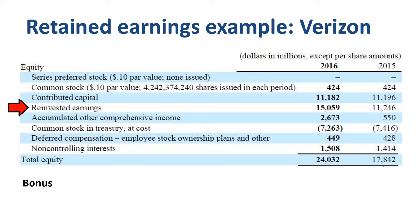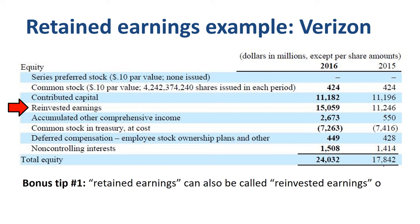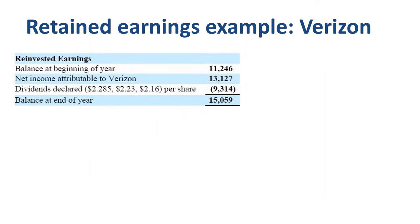Verizon actually calls this reinvested earnings rather than retained earnings, indicating that if you do not distribute all your earnings to shareholders, then you can reinvest them in the business. The formula is: beginning retained earnings plus net income minus dividends equals ending retained earnings. In the case of Verizon 2016, reinvested earnings of $11.2 billion at the start of the year, plus net income of $13.1 billion, minus dividends of $9.3 billion, equals reinvested earnings of $15.1 billion at the end of the year.